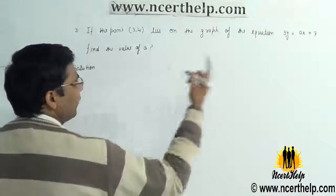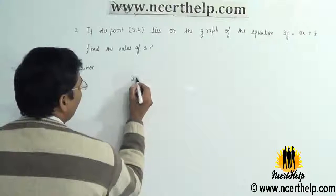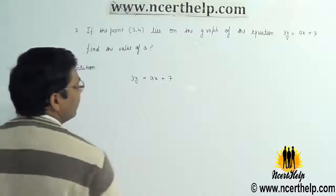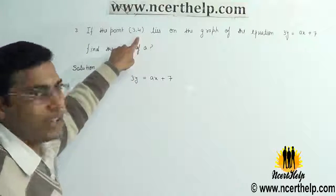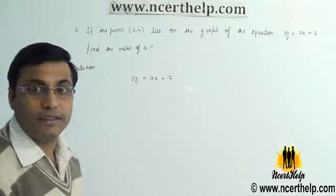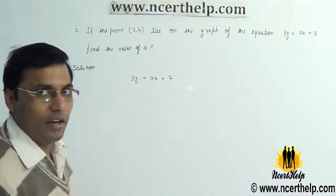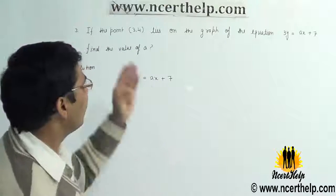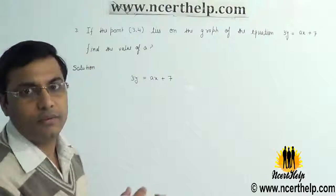First we will write the equation 3y = ax + 7. As this point lies on the graph, the point (3, 4) will satisfy this equation. Whenever a point satisfies an equation, we can plug the value of x and y in that equation.